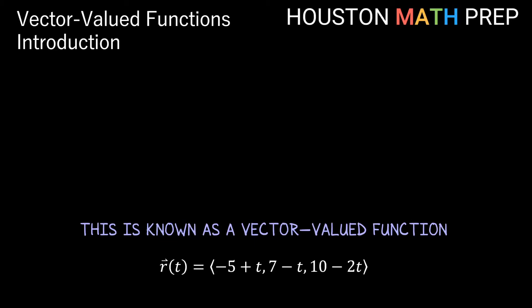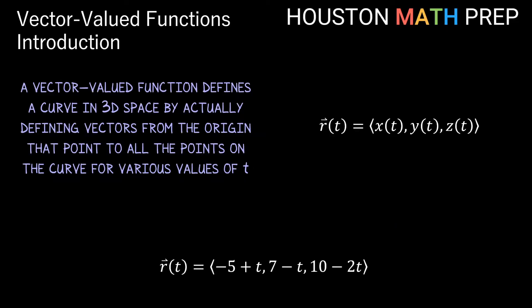This vector-valued function tells us about all the points on the path in 3D space but it does it in a slightly different way. Vector-valued functions in 3D space can be thought of as having components x(t), y(t), and z(t).